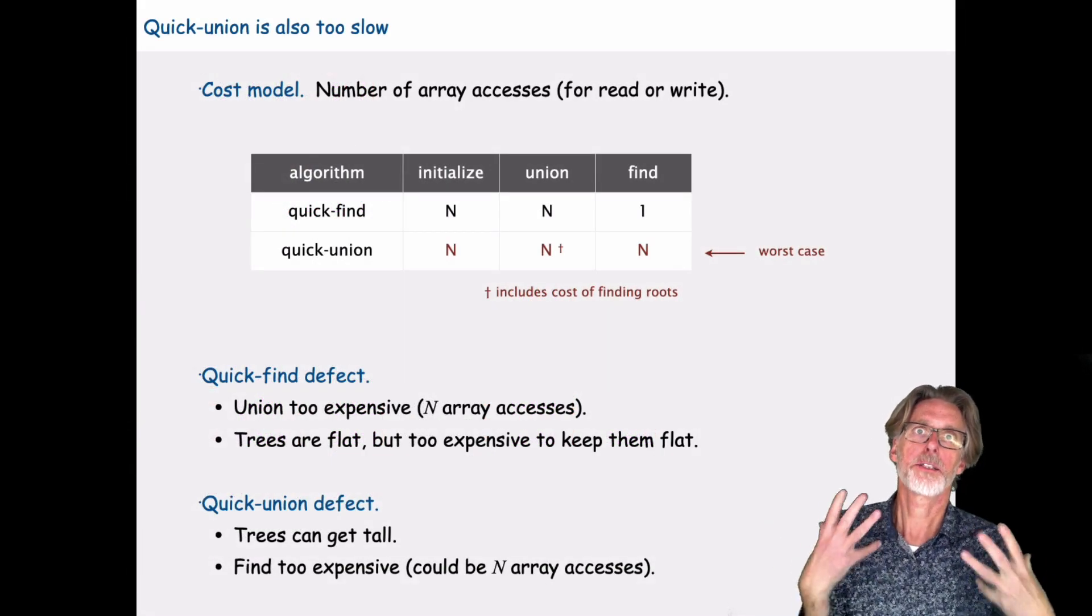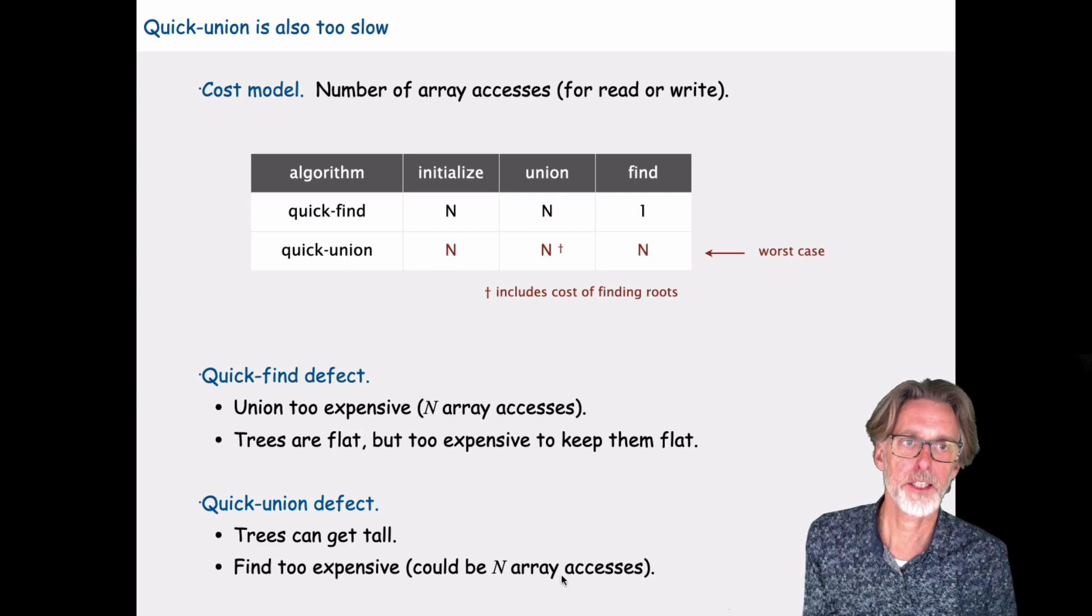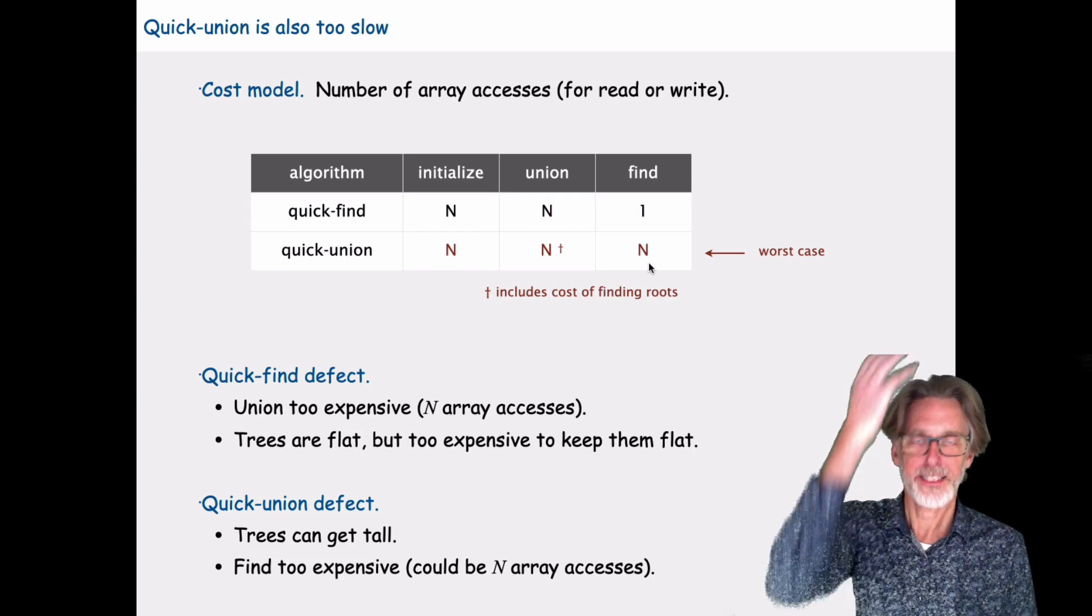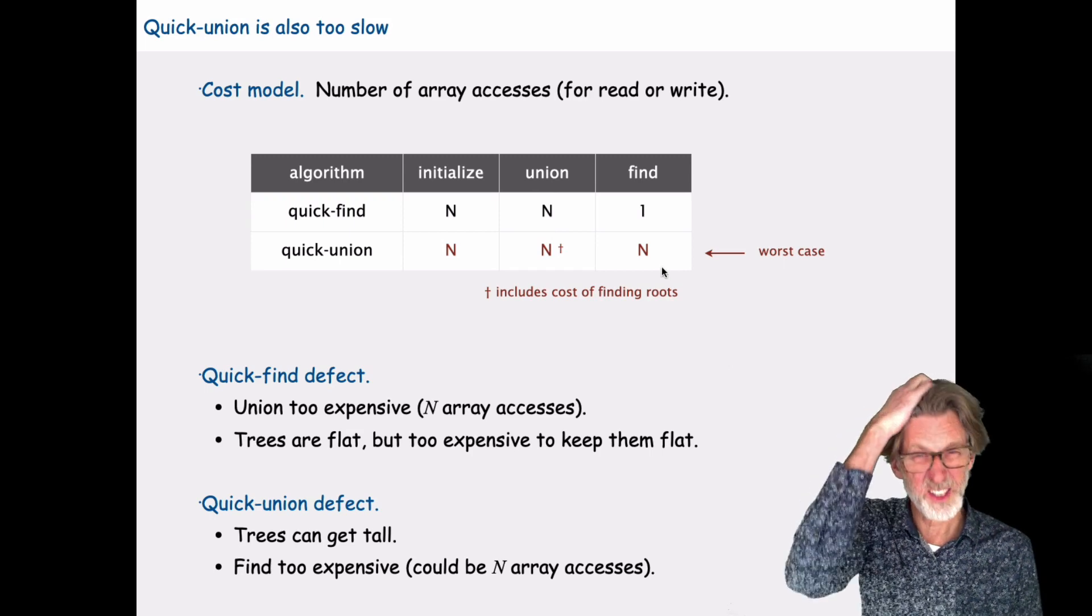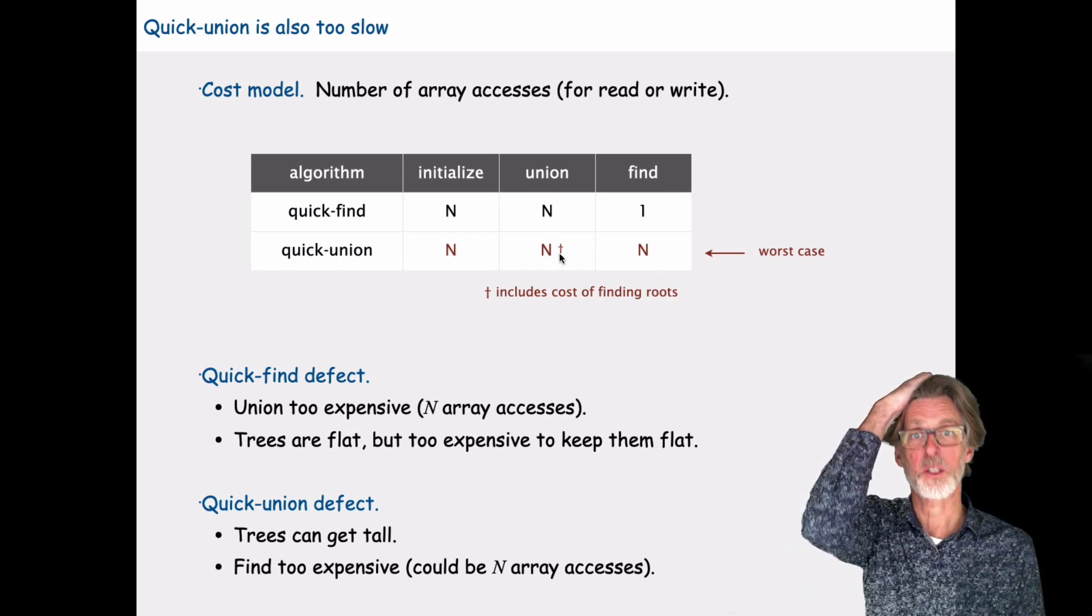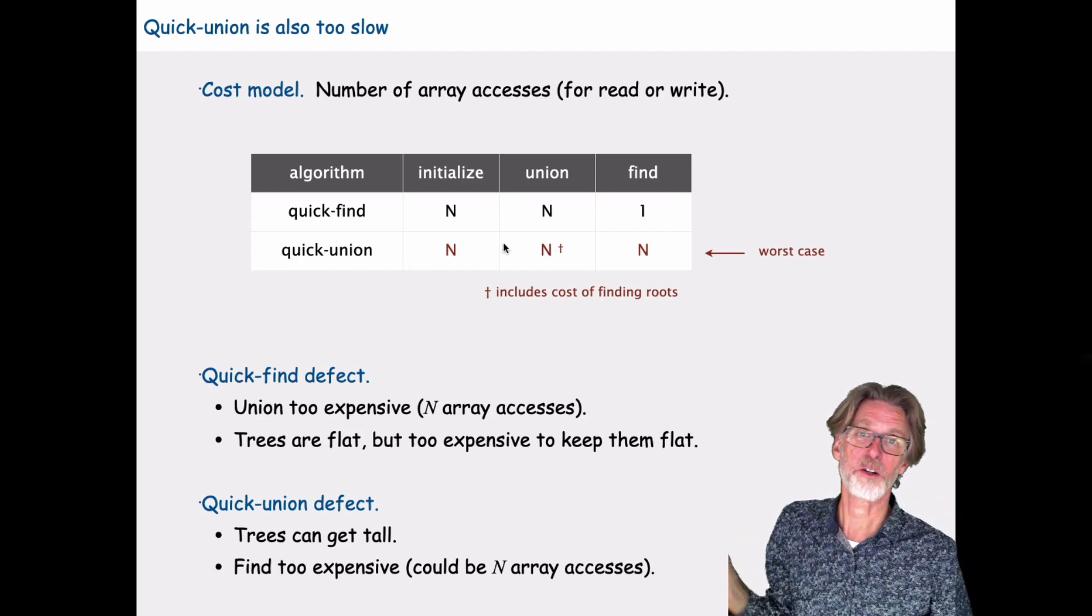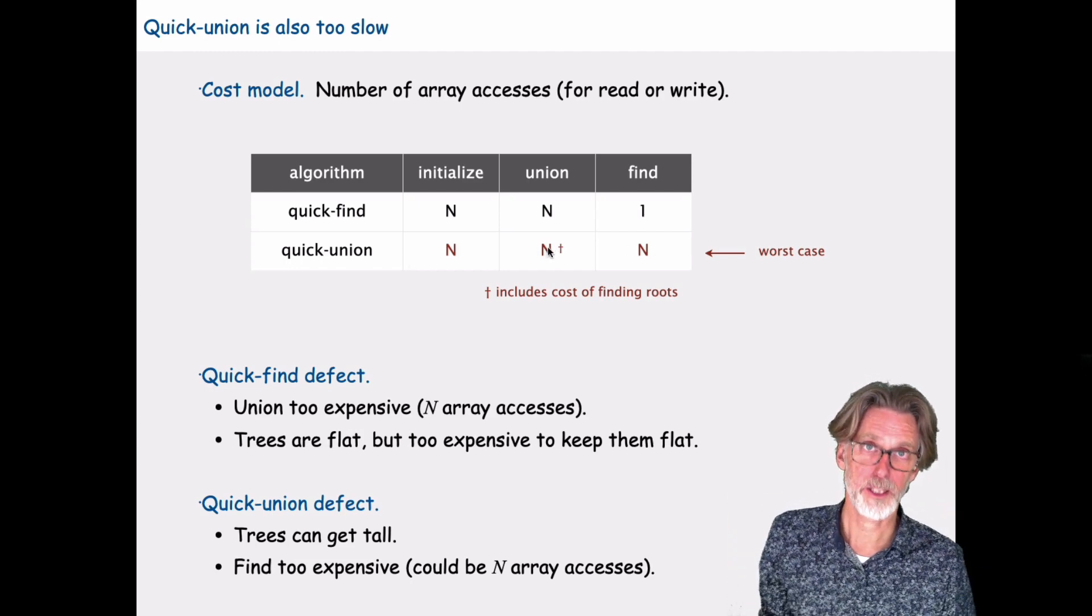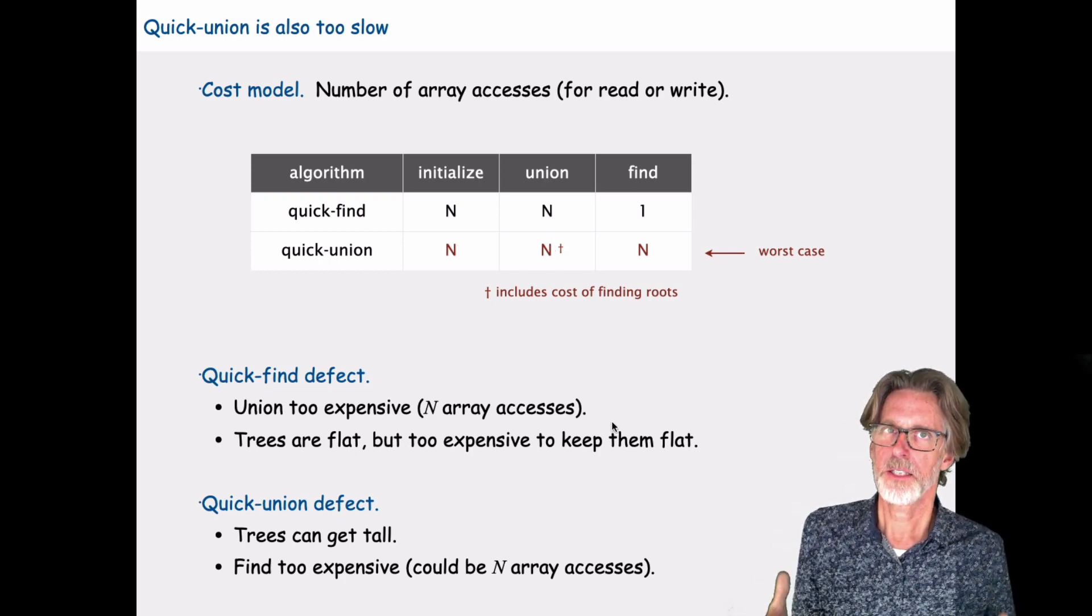So quick union is also too slow. And the problem here is it's actually worse in some ways because whenever we're doing the union, we actually have to do a find. So we have to find the roots. So actually, in this case, all of these operations are going to be linear time. So we can see the problem of these two algorithms.